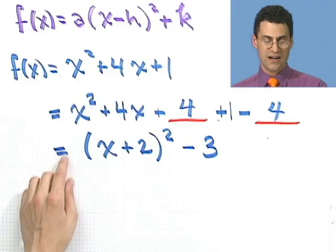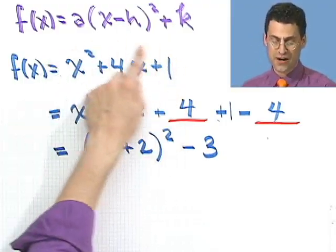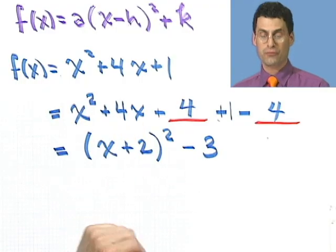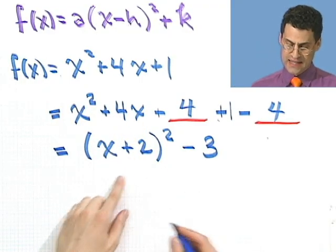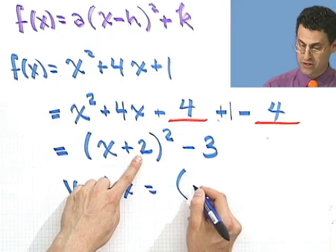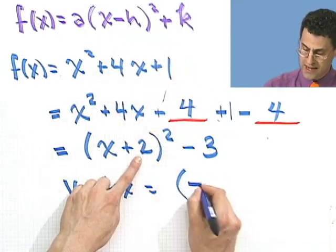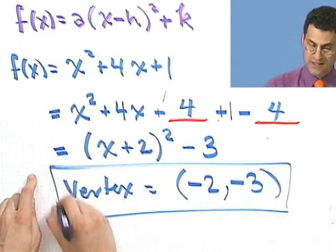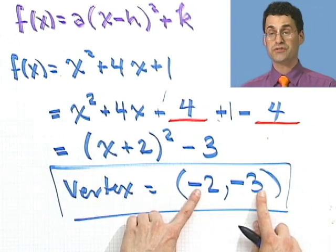So look, voila. I've written this complicated quadratic in standard form. And now, I can just read off where the vertex is. The vertex is at negative 2, negative 2. Because remember, I take the opposite sign here. Negative 2 comma negative 3.